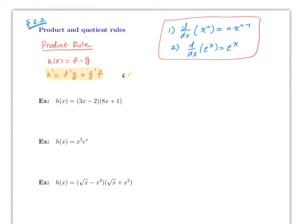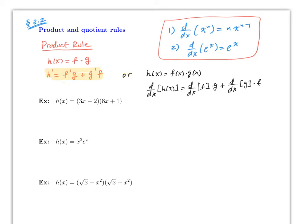Or using the other notation: h(x) equals f(x) times g(x), so therefore the derivative with respect to x of h(x) will be the derivative with respect to x of f, times g, plus the derivative with respect to x of g, times f — it's exactly the same thing. Just keep in mind that all we're going to do is use this formula multiple times.